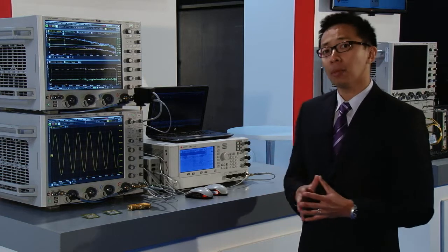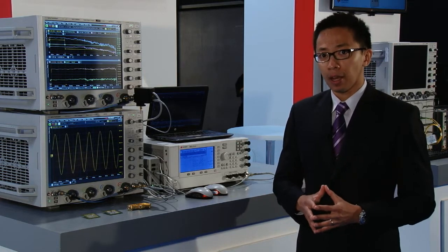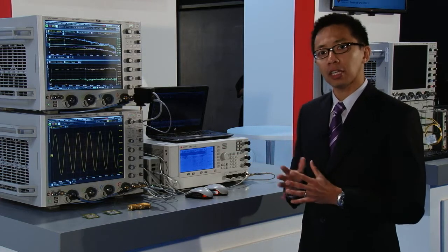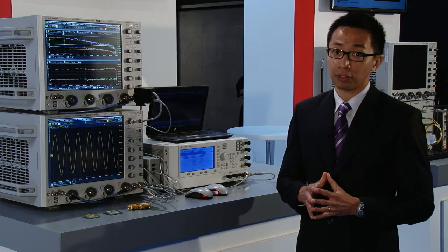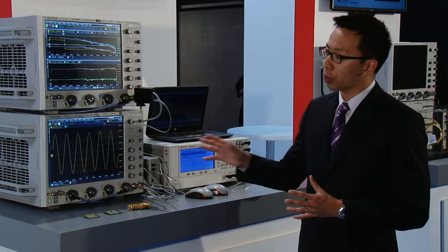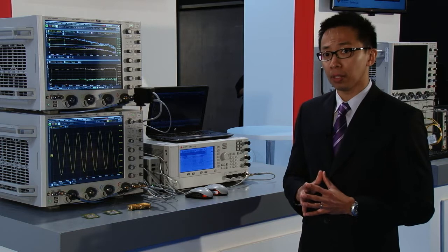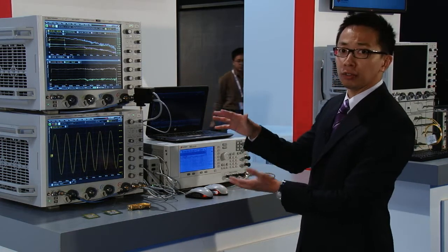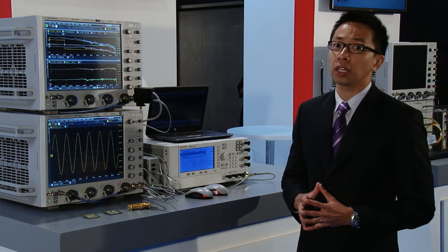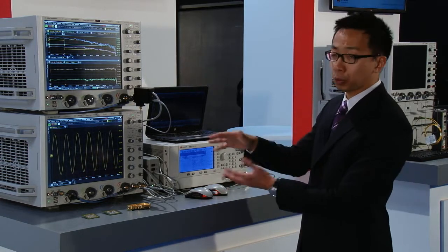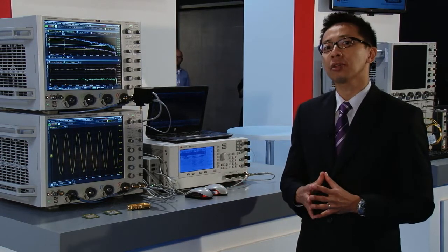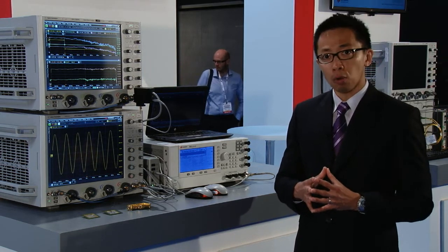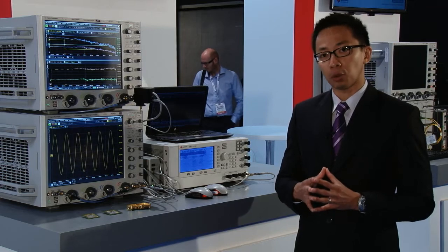There are three different demos that I would like to show you today that can show you the signal integrity performance of the scope. First is the magnitude and phase response flatness of the scope. Second, we're going to show you the ENOB performance of the scope. And third, we're going to show you how you can achieve four channels up to 63 GHz by combining two scopes together and how we can synchronize the scope very tightly. So we are talking about very low inter-scope jitter between the scopes.